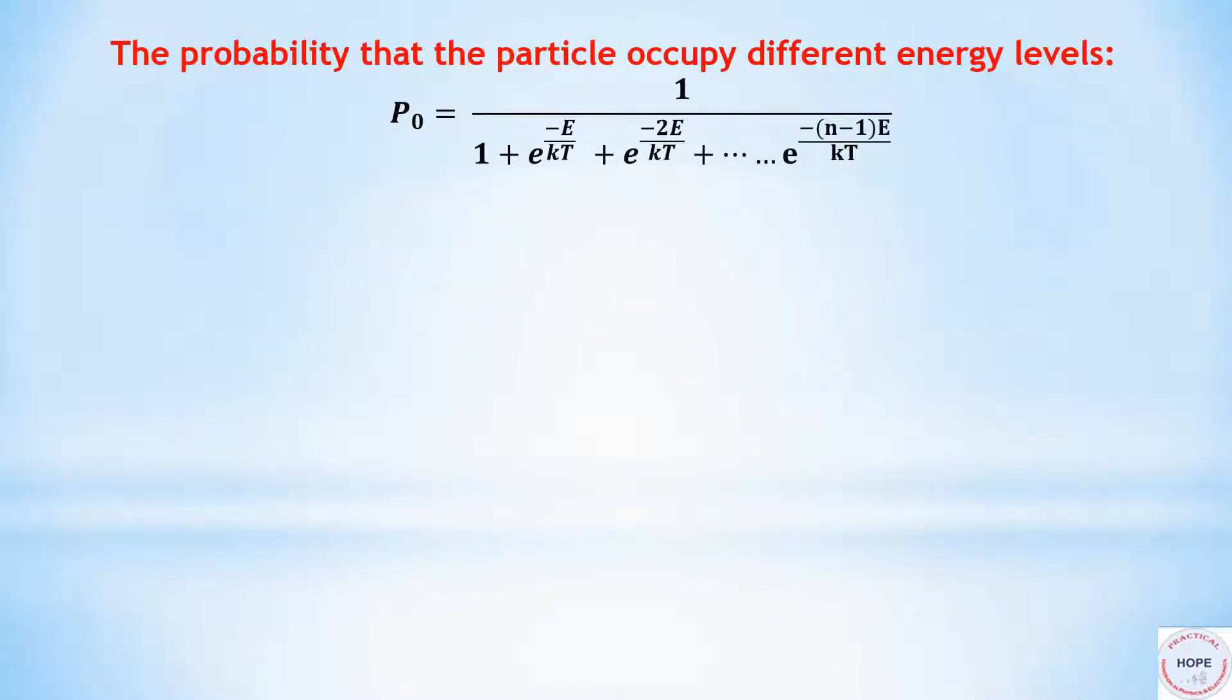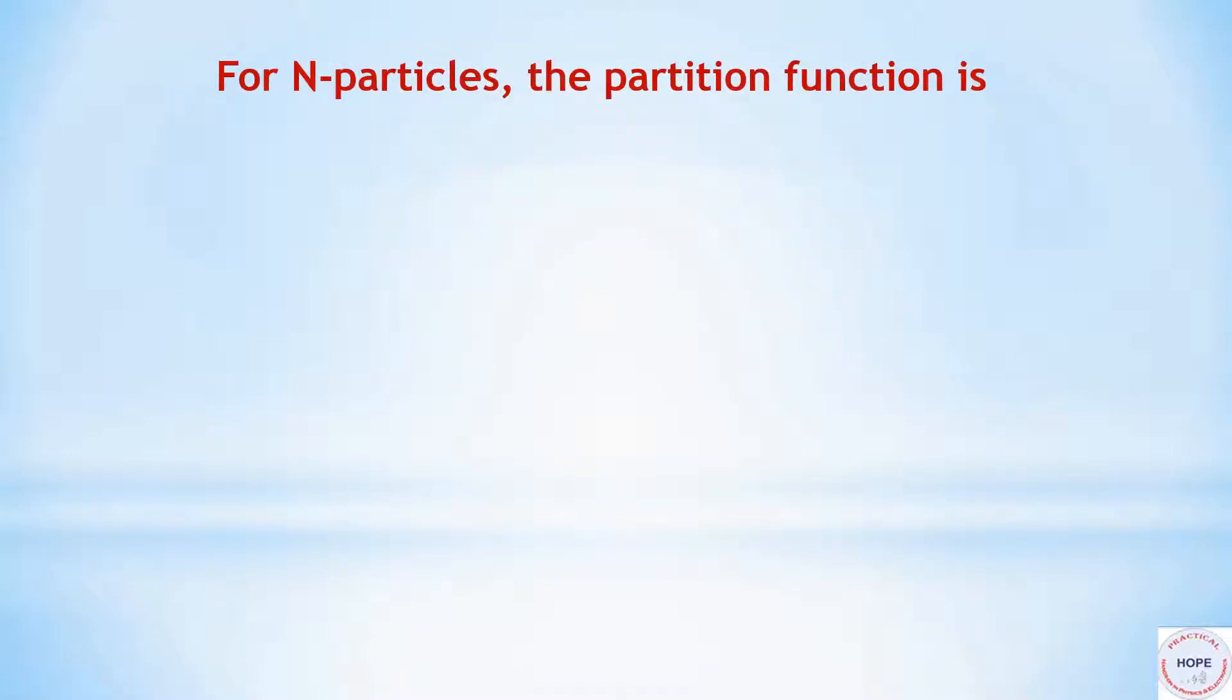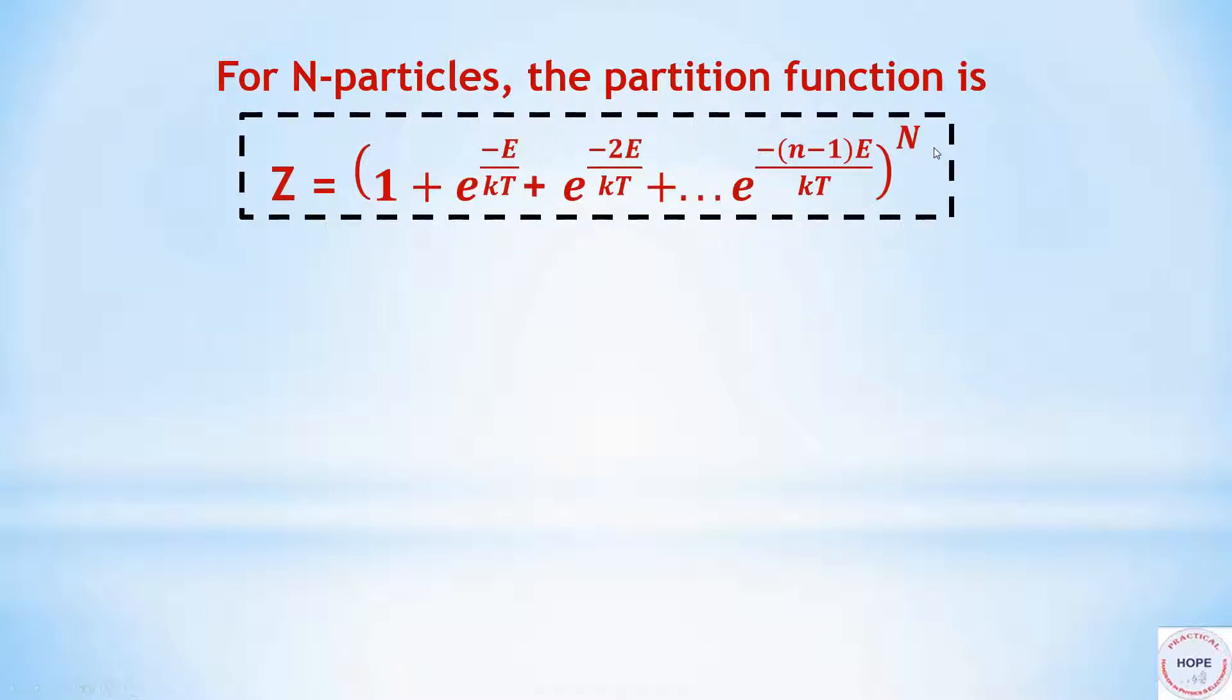P0 is the probability that the particle occupies level 0, P1 is the probability that the particle occupies level 1, and so on. Since we are considering the case of Maxwell-Boltzmann distribution where the particles are distinguishable and non-interacting, for N particles the partition function is given by this.